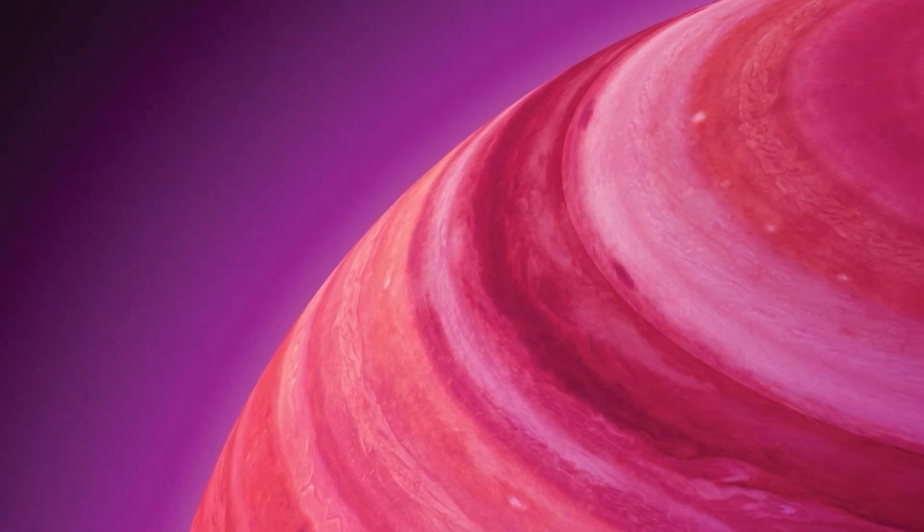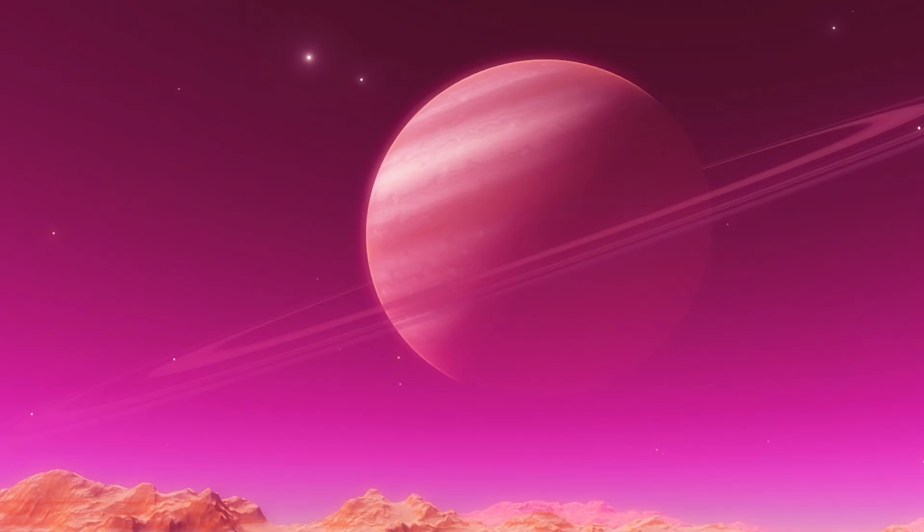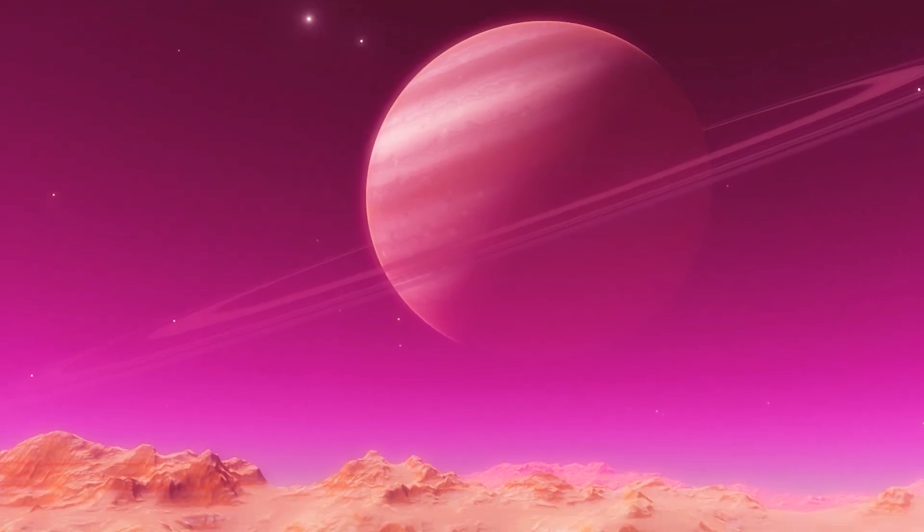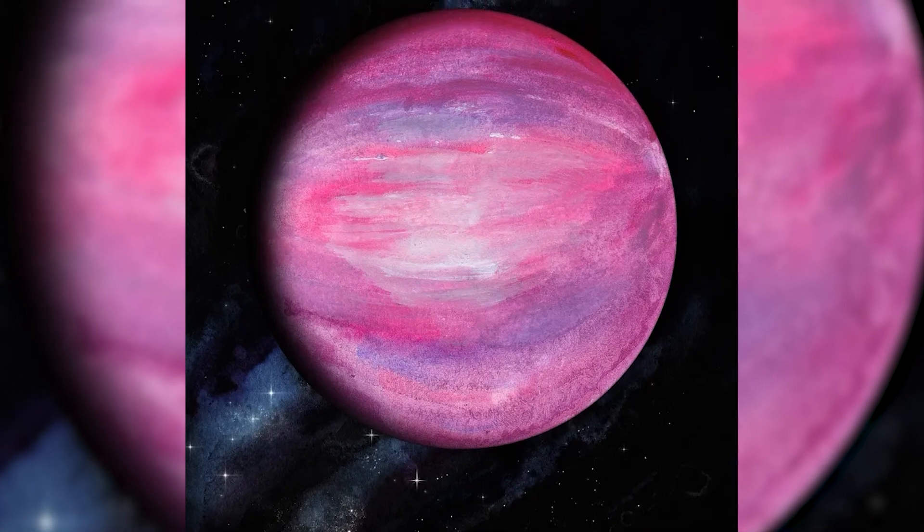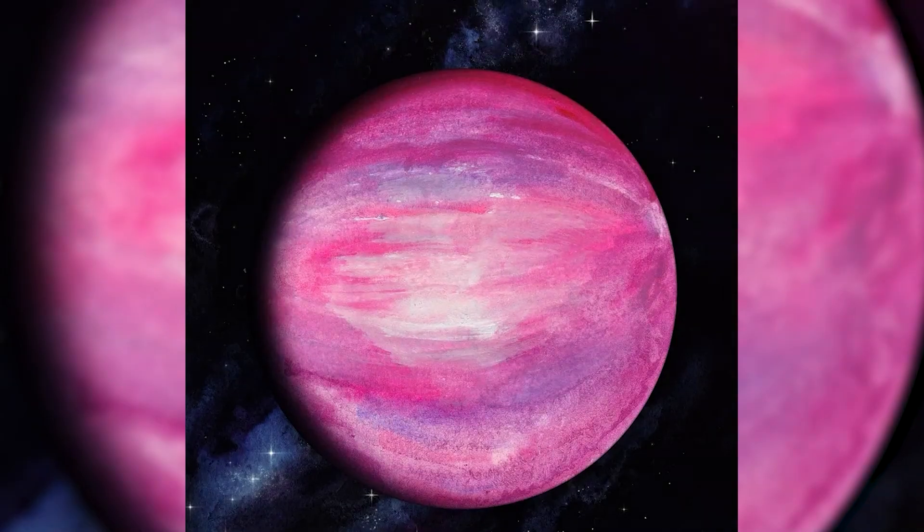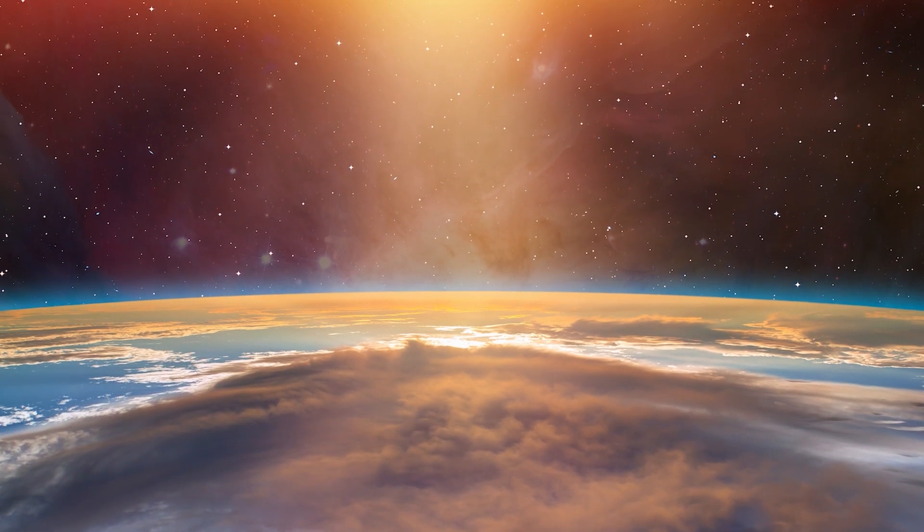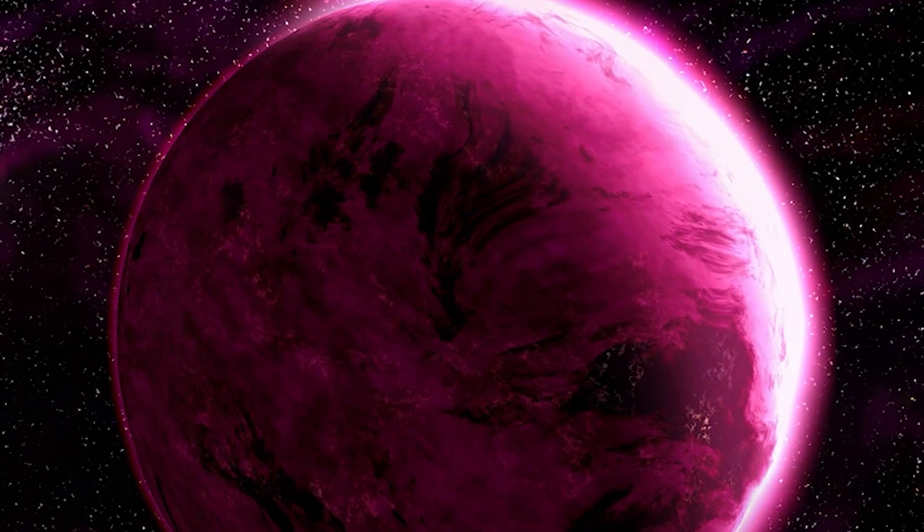This distant world is about four times more massive than Jupiter, but its size is quite similar. The reason for its unusual color lies in its youth. GJ504b is around 160 million years old, considered a cosmic newborn. As the exoplanet is still evolving and releasing heat from its formation, it emits a subtle magenta glow.